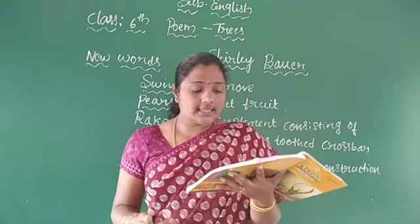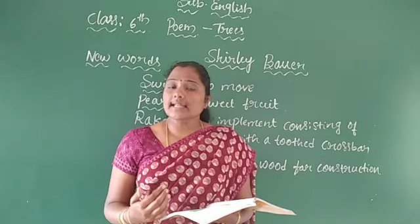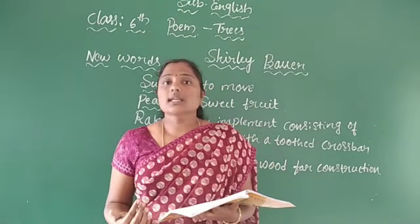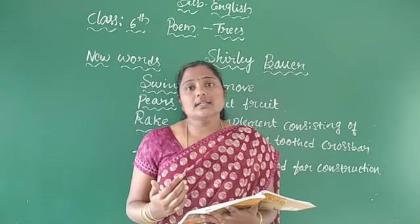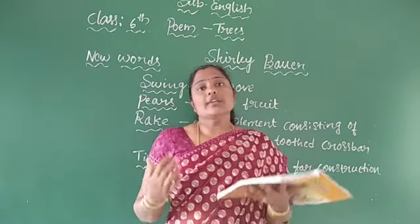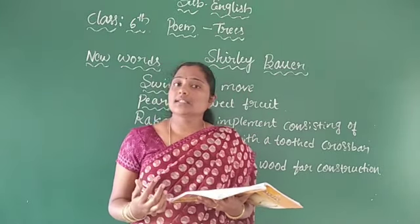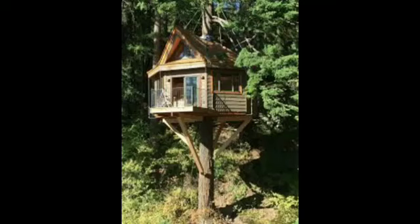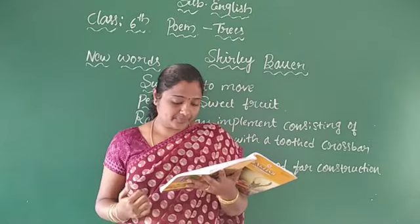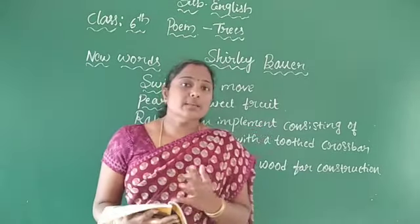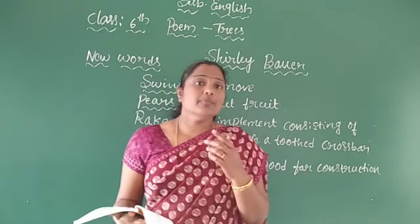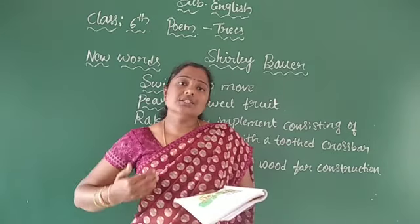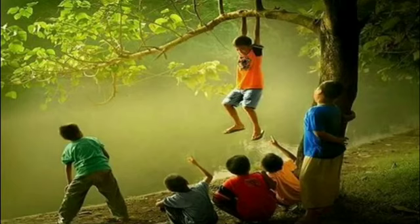Trees are also used to make tree houses — just like birds build their nests in trees, in the same way people build tree houses using the wood or stem. We can build beautiful tree houses by using the wood and stem of trees, and people love to make tree houses and live along with friends. 'Trees are to swing on' — swing means to move, going from front to back. Children use the branches of trees to swing.